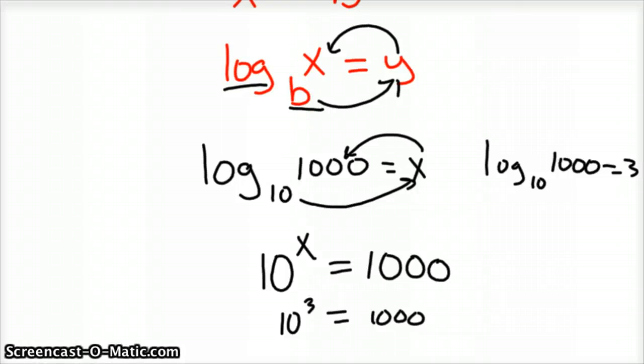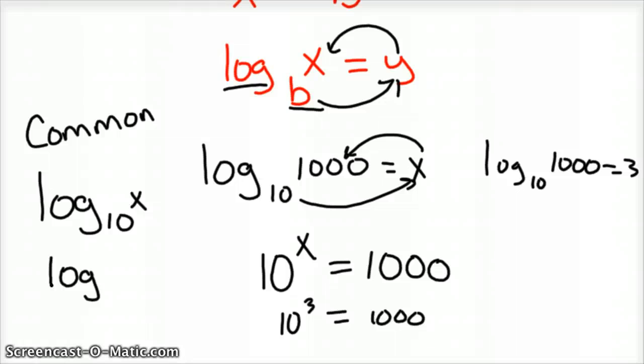And what I've shown you is the common logarithm. A common logarithm is log of base 10, log base 10 of some value. So, and we don't, it happens, you know, we're at a base 10 number system.